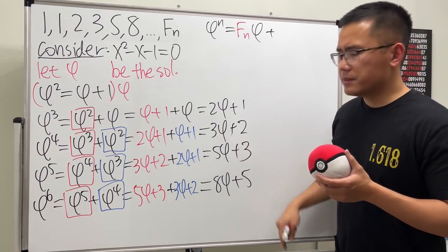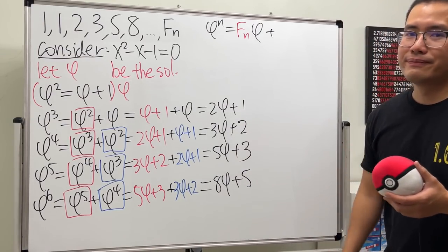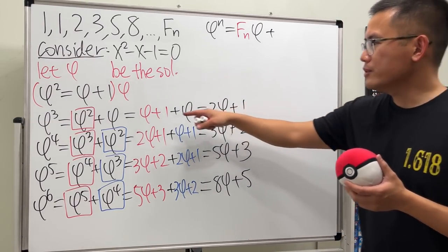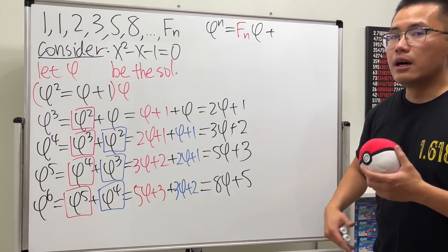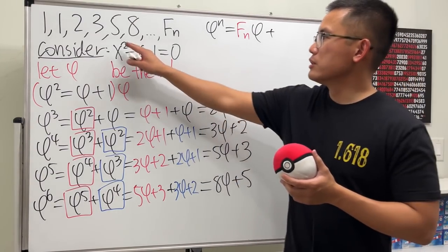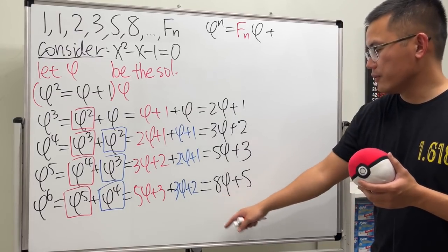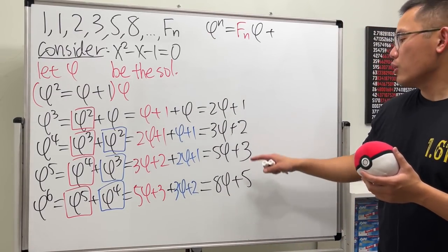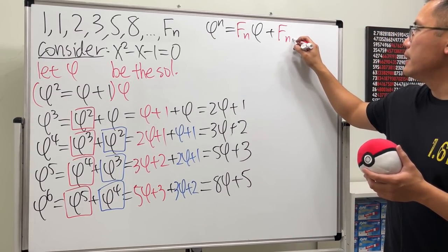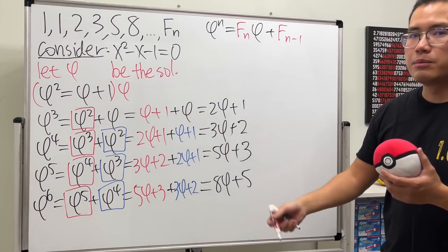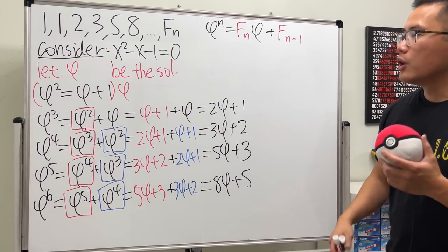And then we add. How about the constant terms? Where do they come from? The truth is, they are also the Fibonacci sequence. But the thing is that they are just the previous term. Right? The φ is in front of the eight. So for the constant terms, it's just Fₙ minus one, the previous term of the Fibonacci sequence. Cool.